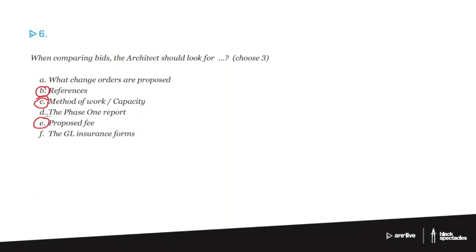Looking at A, what change orders are proposed. Change orders don't happen until a bidder has already become the GC. So it can't be A. You don't know at the bidding phase anything about change orders because there's no contract to change. A change order is a change to the contract. A phase one report is about environmental issues and doesn't fit to this situation.